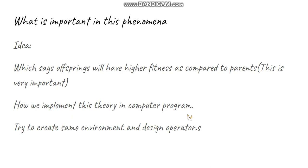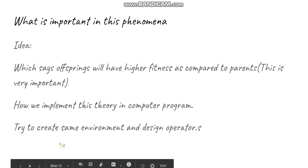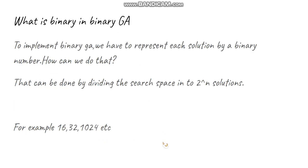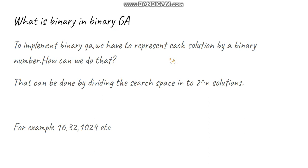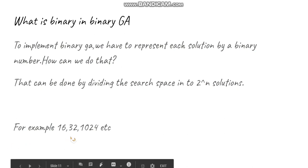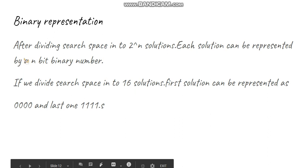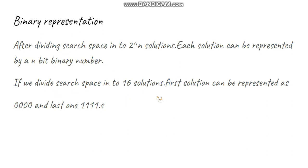To implement this theory in a computer program, we need to create the same environment and design corresponding operators. In Binary GA, the word 'binary' refers to the solution representation — each solution is represented by a binary number. The first step is to check the input search space and divide it into 2^n number of solutions; for example, 16, 32, or 1024 solutions. After dividing the search space, each solution is represented by an n-bit binary number. For 16 solutions, they are represented from 0000 to 1111.